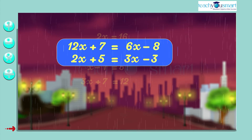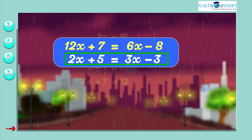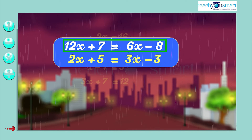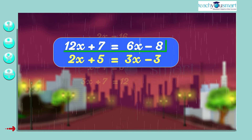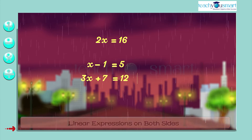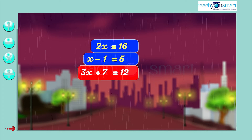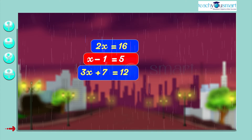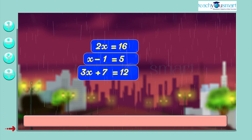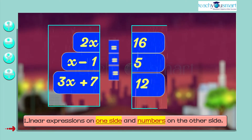By observing these, we can say that the equations 2x + 5 = 3x - 3 and 12x + 7 = 6x - 8 have linear expressions on both sides. But in the equations 3x + 7 = 12, x - 1 = 5, and 2x = 16, we can see linear expressions on one side and numbers on the other side.